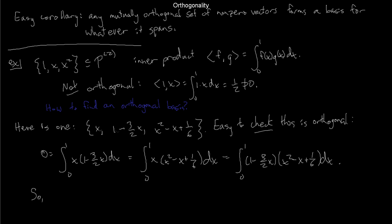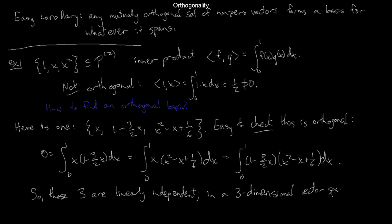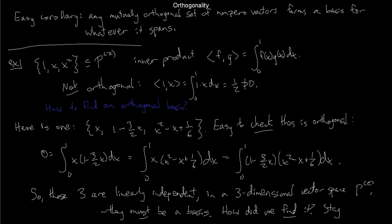It follows immediately that these three polynomials are linearly independent. They live in a three-dimensional vector space — P2 is three-dimensional — so three independent vectors form a basis for P2. As for how we found this orthogonal basis, there's a justifiably famous process called the Gram-Schmidt process that we'll go into in great detail very soon, so stay tuned.